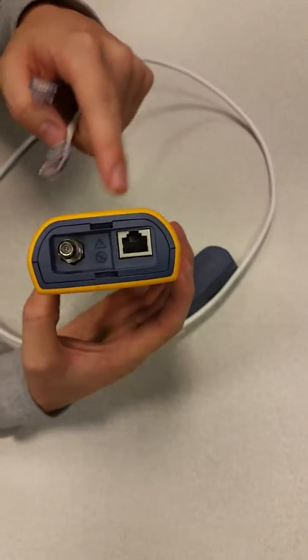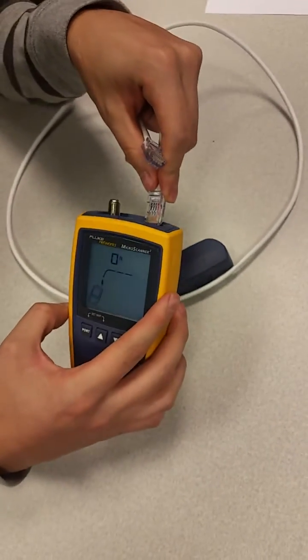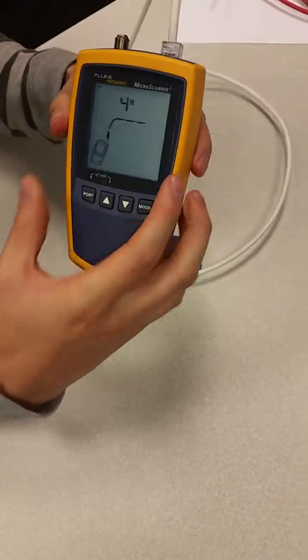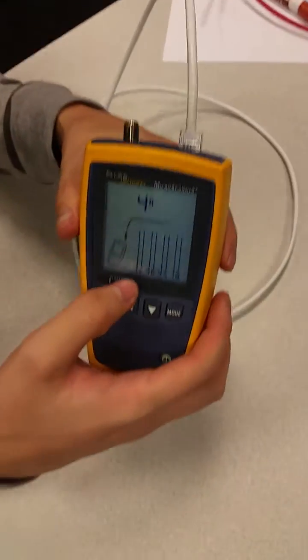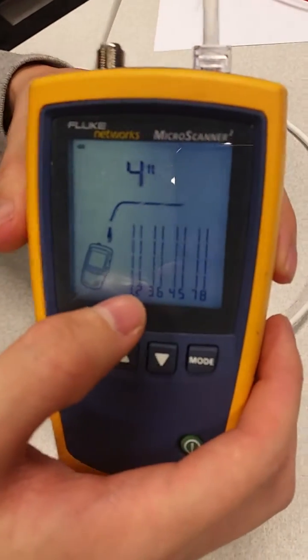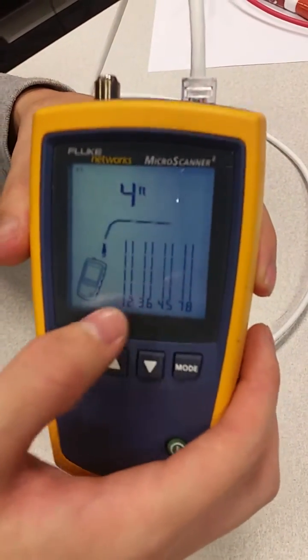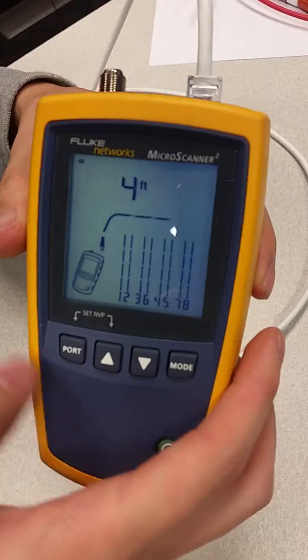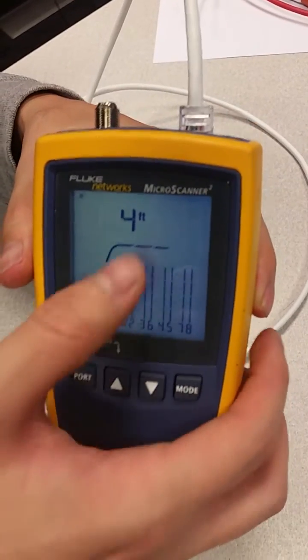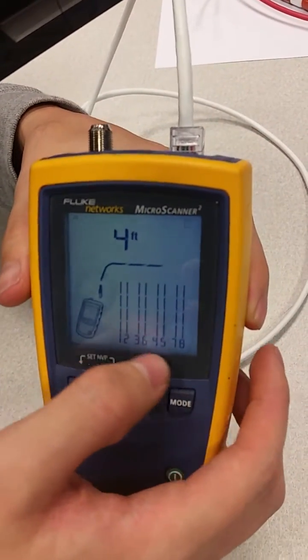On the screen it'll tell you the size and also the numbering of what pins are going to what opening on the RJ45. So since this is all straight and all the numbers match correctly in order the way it's supposed to be—1, 2, 3, 6, 4, 5, 7, 8—